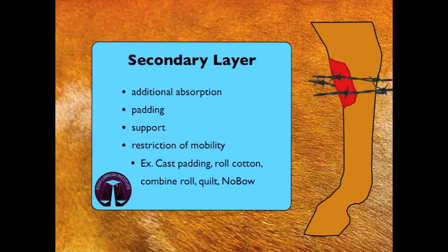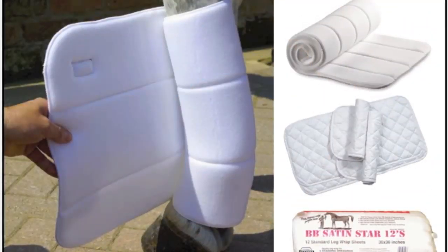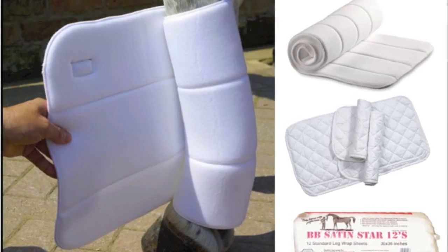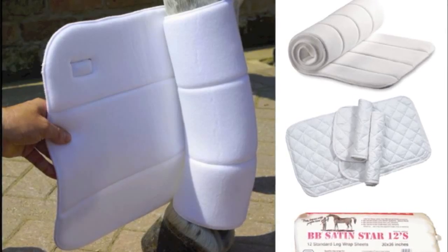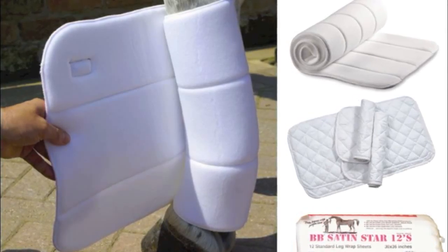After the primary layer of the bandage has been applied, the secondary layer is added. This layer provides padding, absorption, and support for the limb while restricting mobility. Examples of secondary padding include cast padding, roll cotton, combine rolls, quilts, and no-bows.